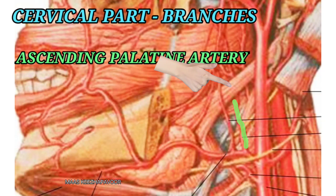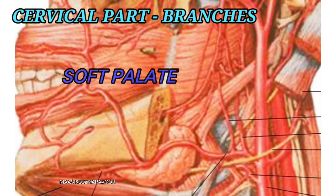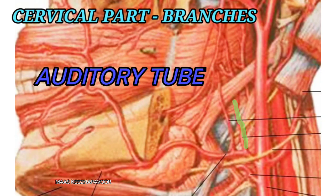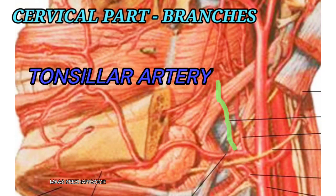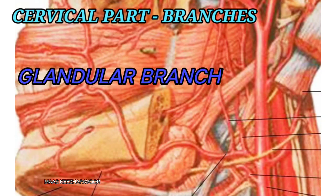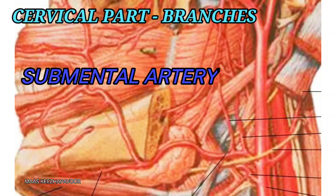The branches from the cervical part are: the ascending palatine artery, which runs between styloglossus and stylopharyngeus and supplies the soft palate, palatine tonsil, auditory tube, and pharynx; the tonsillar artery, which supplies the palatine tonsil; glandular branches, which supply the submandibular gland and submandibular lymph nodes; and the submental artery, which supplies the mylohyoid and anterior belly of digastric. This artery anastomoses with the mylohyoid artery.